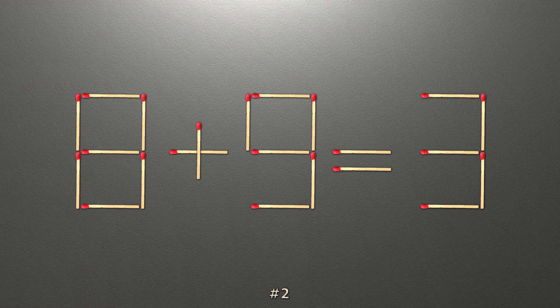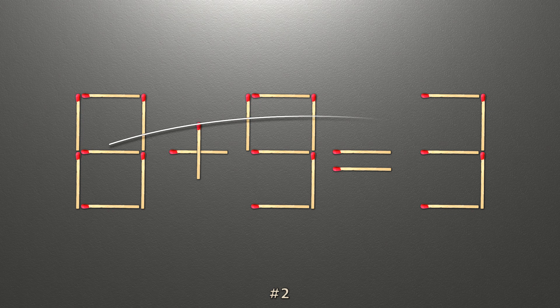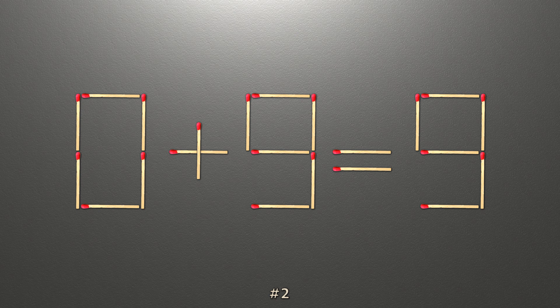To do this, all we need to do is move this match right here. Now when we check the condition, 0 plus 9 is 9, and 9 equals 9. Now our equality is correct.